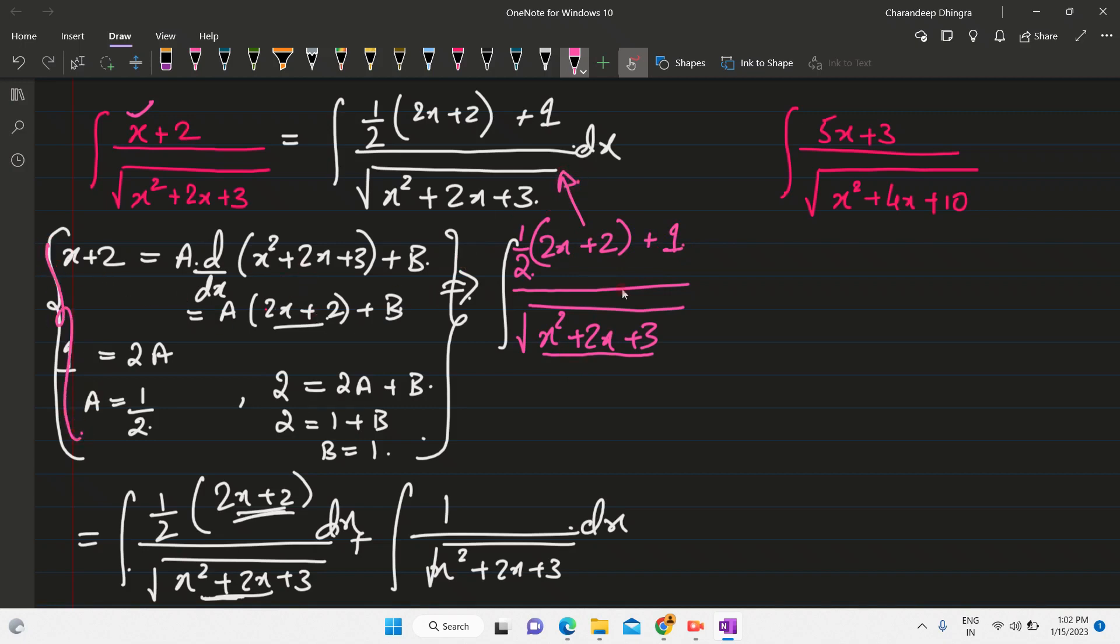Similarly, let's say if I try this question, what I'll do is, I can use this method. Linear is equal to A into derivative of quadratic plus B, but I can use a shortcut. So what is the shortcut? See, once again,